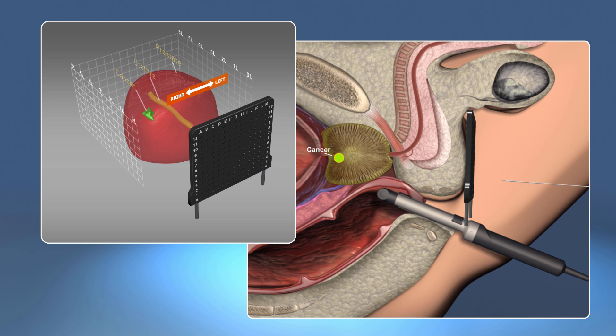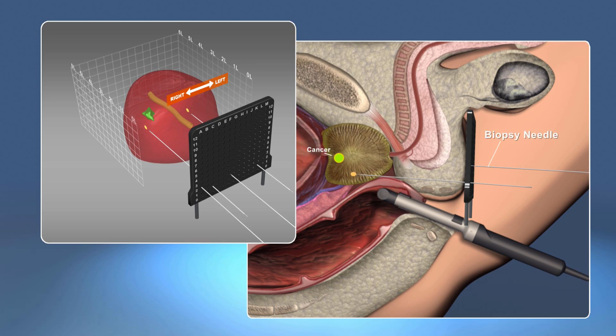The first step of the procedure involves implanting two tiny inert seeds into the prostate. Should a patient be a candidate for targeted focal therapy, or treatment of only the area or areas of cancer, Dr. Crawford will use these implanted seeds to realign the prostate to the appropriate position.